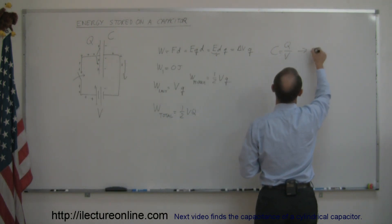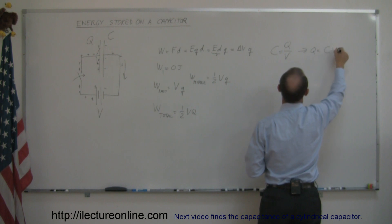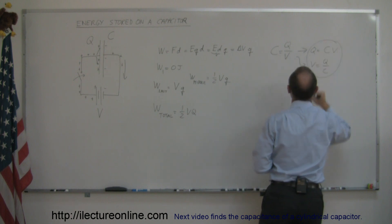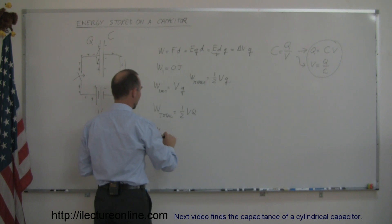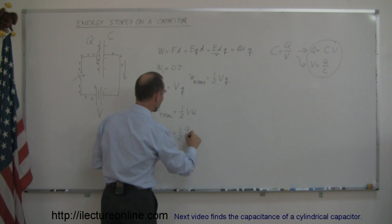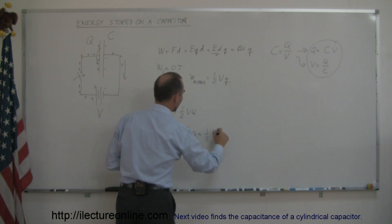So, here I can take this equation and say that Q is equal to C times V, or I can say that V is equal to Q divided by C. So, we can take those two equivalents of Q and V, plug them in here, so we can say that the work total can also be expressed as one half times instead of V, I can write Q over C, so it would be Q over C times Q, which is equal to one half Q squared over C.